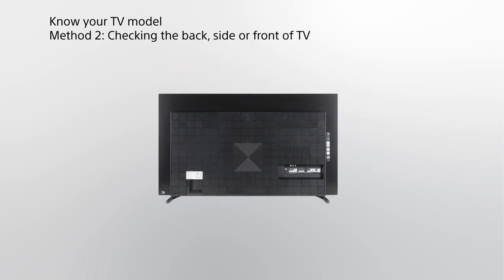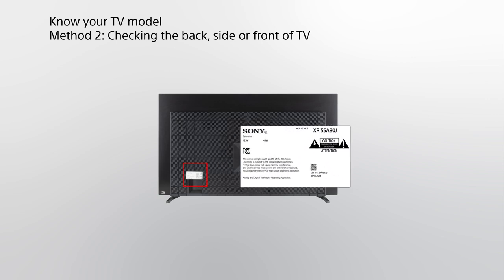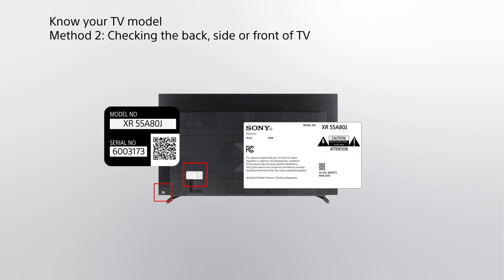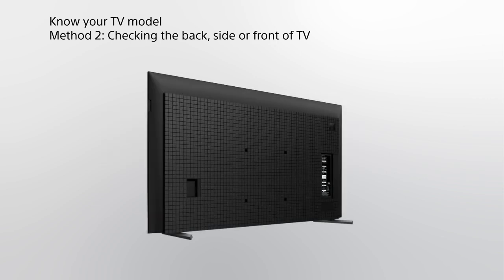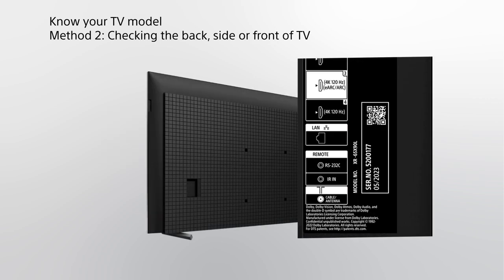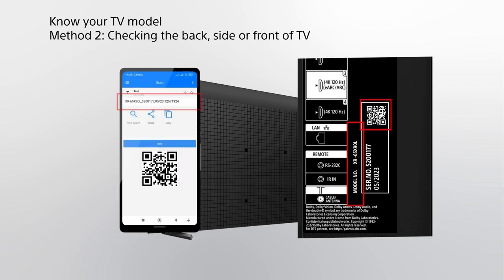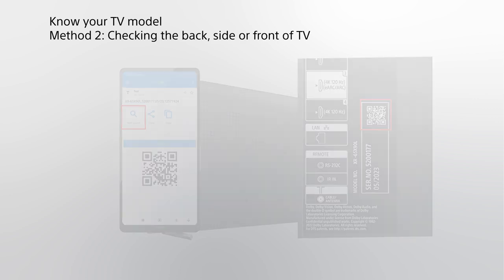Method 2: Checking the back, side or front of the TV. The model name is normally found on the sticker located either at the back of the TV, on the label near the side input terminals, or engraved on the front panel of the TV. For newer TV models, the product sticker also comes with a QR code. When scanned, this will show the model number, serial number and manufactured date. Newer Android phone models can also direct you to the TV model support page.